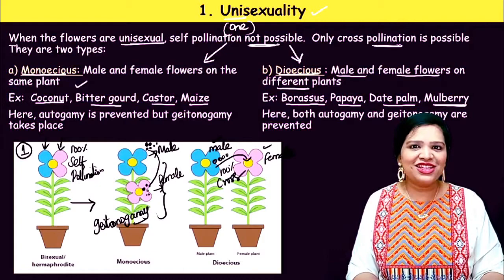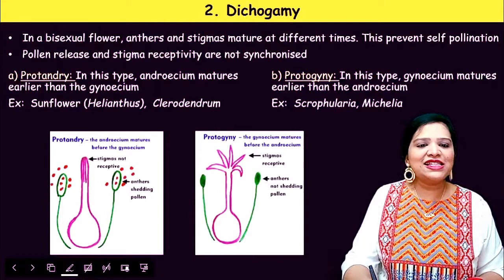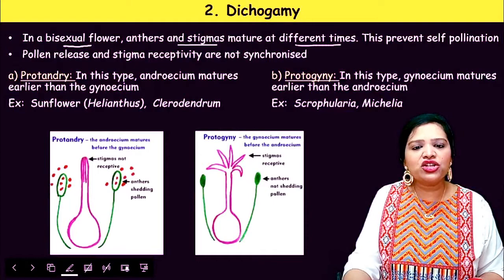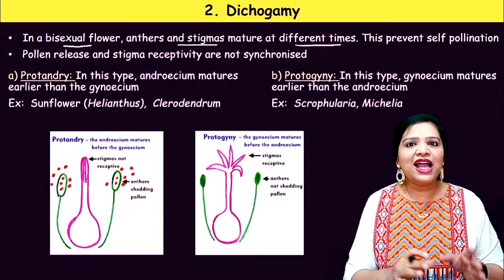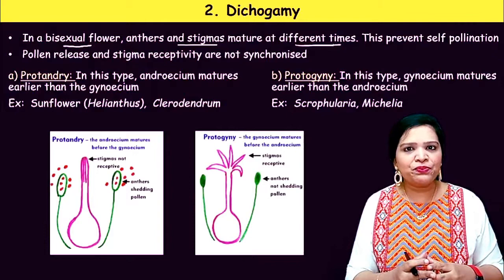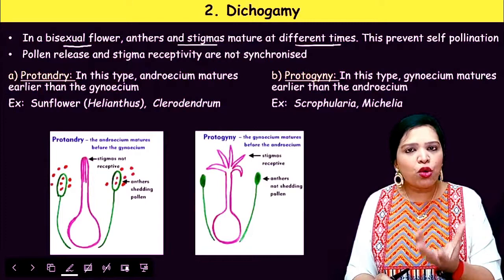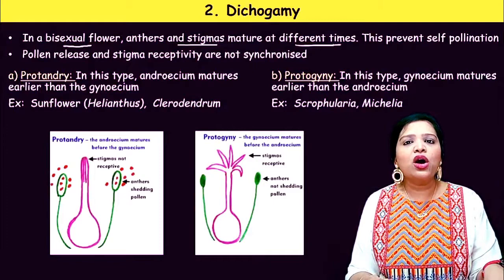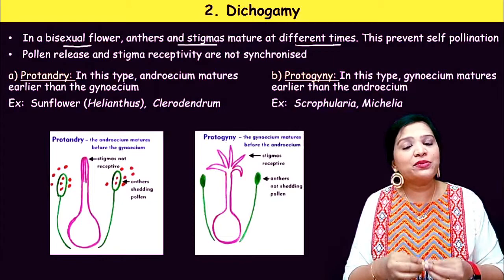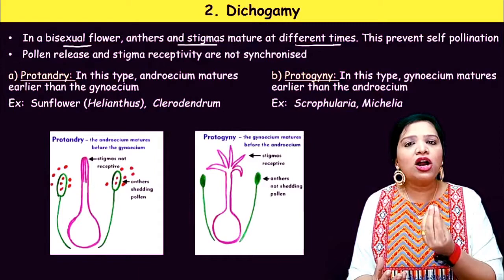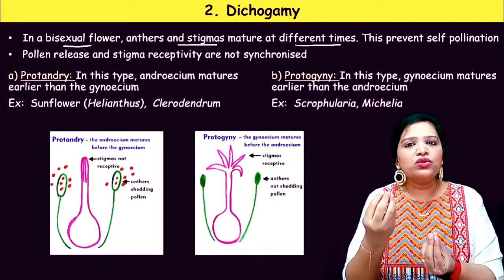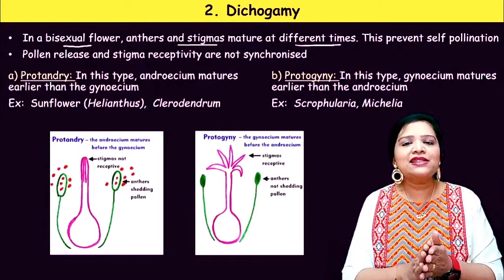The second type of adaptation is dichogamy. In bisexual flowers, the anther and the stigma mature at different times — there is a time lapse between them. When the stigma is ready but the anther has not matured and is not releasing pollen grains, self-pollination is prevented. Similarly, if the pollen grains are released but the stigma is closed and not matured, those pollen grains are carried by pollinators to another plant.